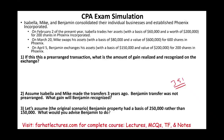On February 2nd, Isabella trades her asset — basis of $60,000, worth $200,000 — for 200 shares of the new corporation Phoenix. On March 20th, Mike swaps his assets — $80,000 of basis with a value of $600,000 — for 600 shares of Phoenix. On April 5th, Benjamin also joined and exchanged assets with a $150,000 basis and a value of $200,000, receiving 200 shares.